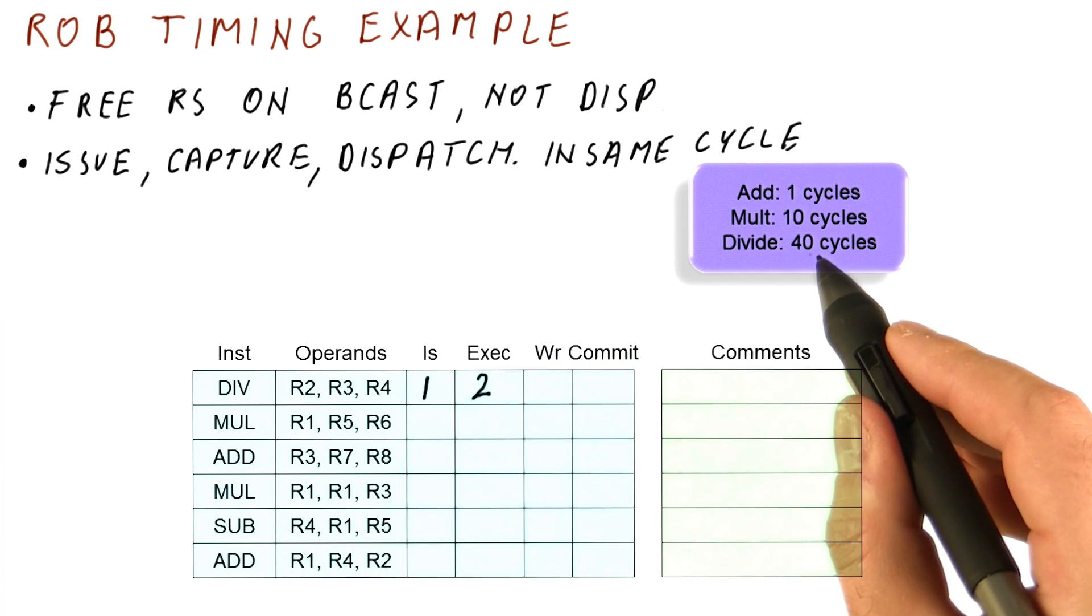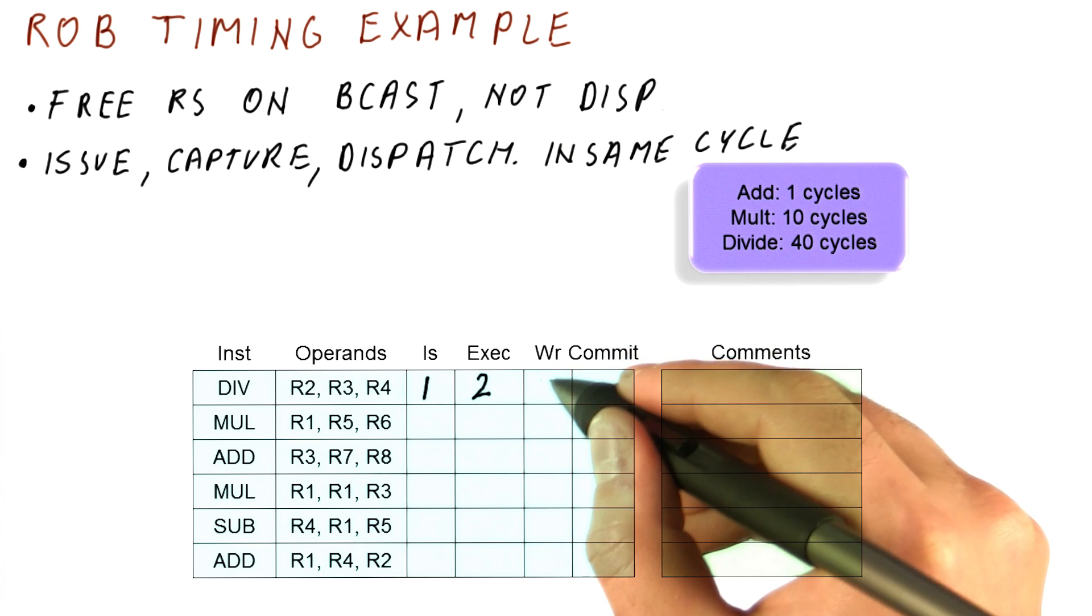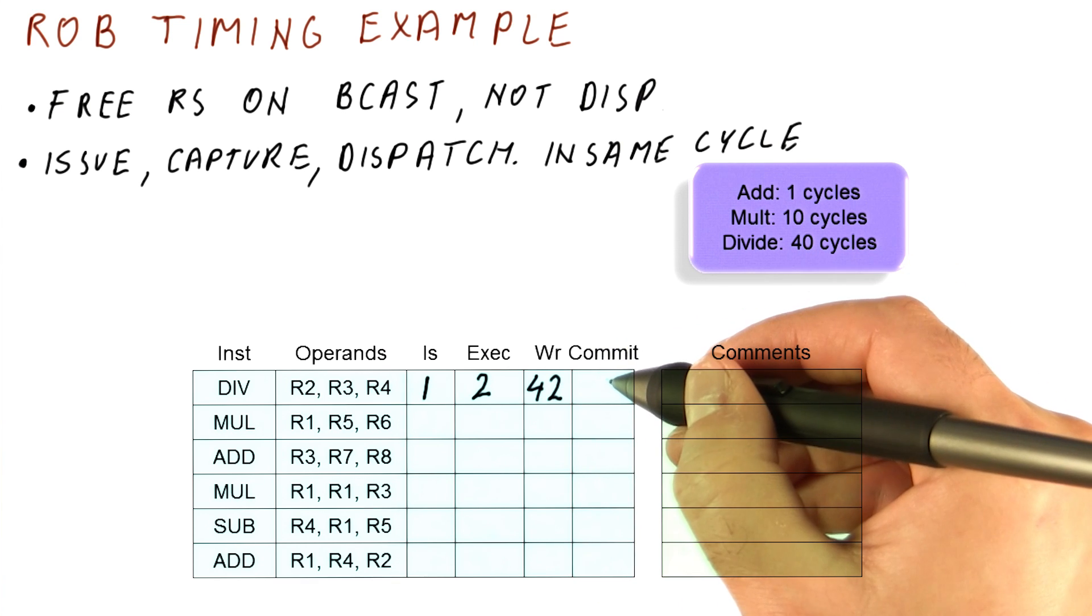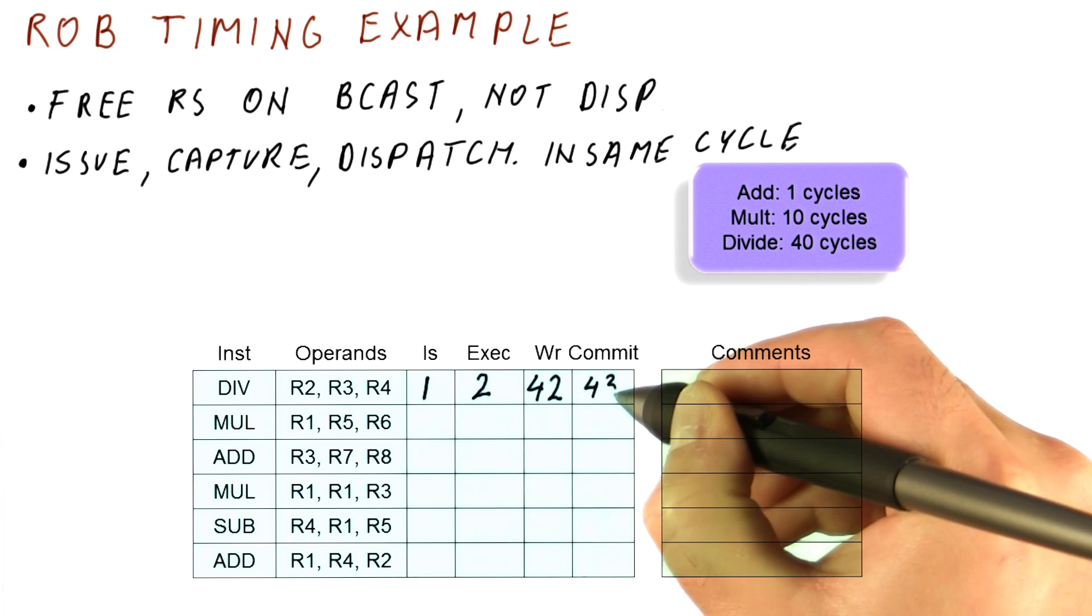It's a divide instruction, takes 40 cycles to do it. So 40 cycles after this one, we will try to write the result, and that happens in cycle 42. And commit will happen in the following cycle, because this is the very first instruction, so we can just say 43 here.